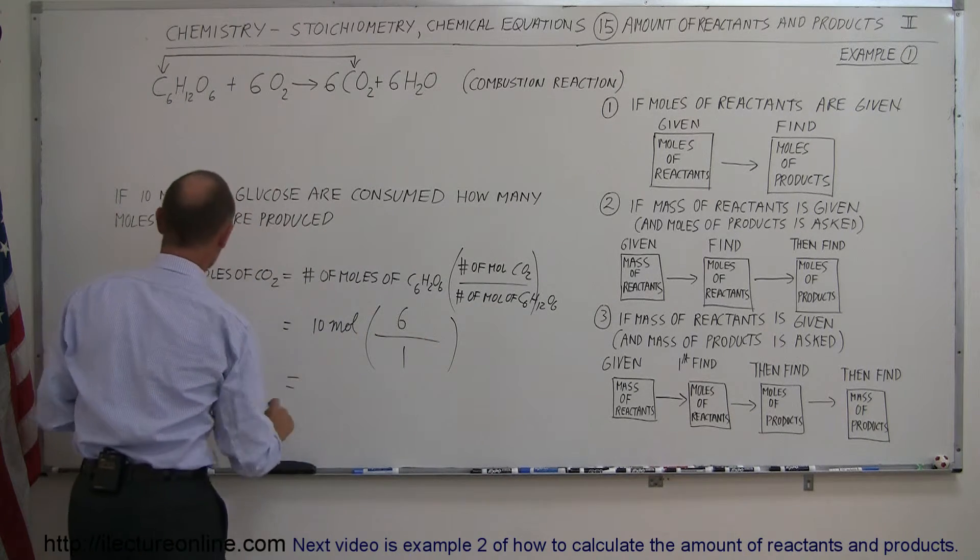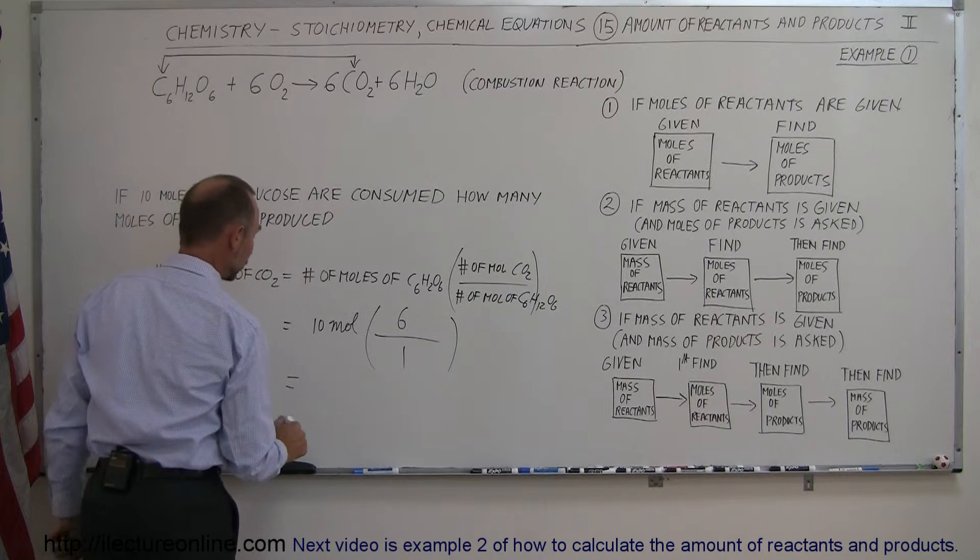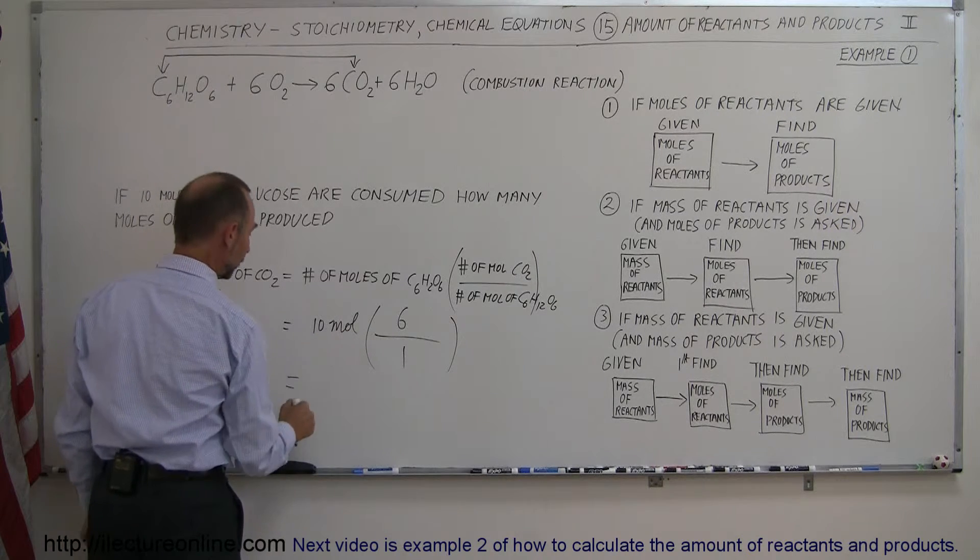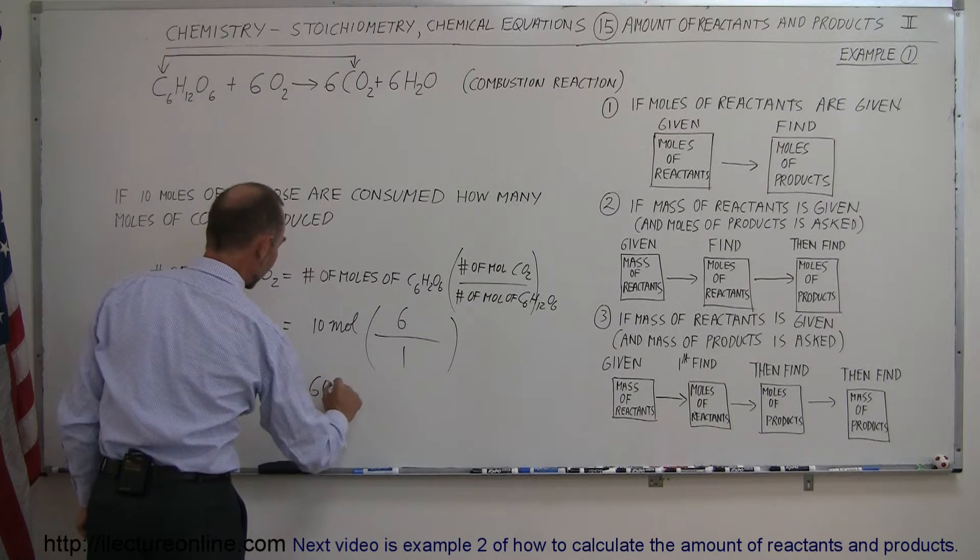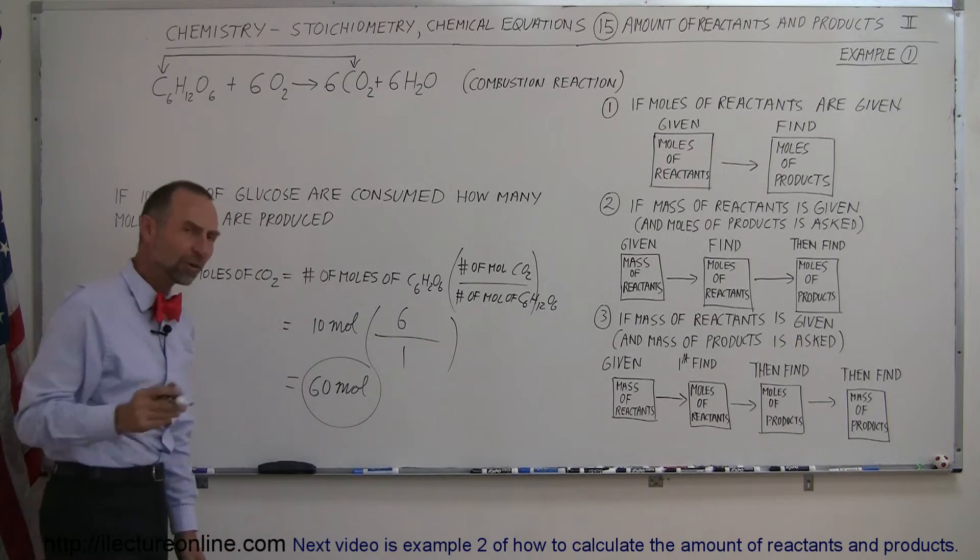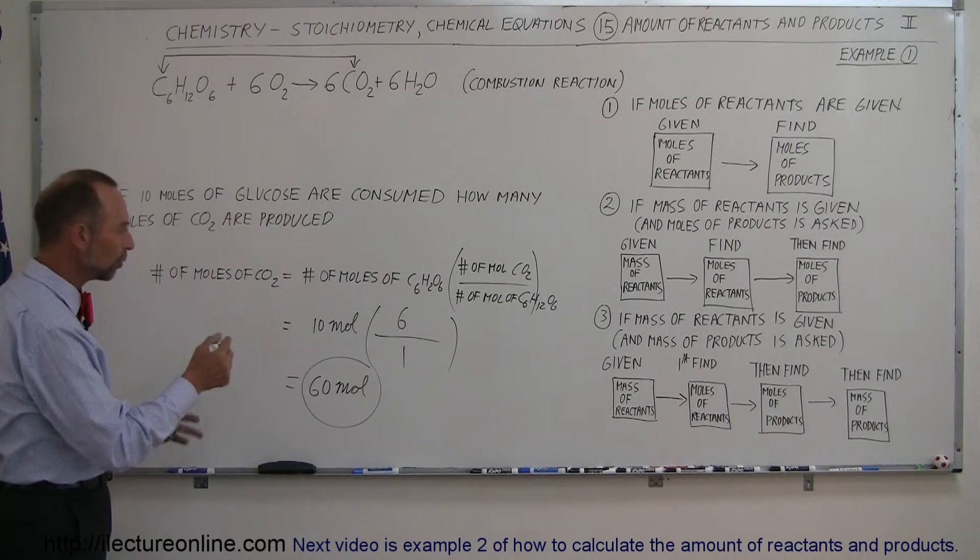So that's a 6 to 1 ratio, which means that the number of moles of carbon dioxide produced when we start with 10 moles of glucose is 60 moles. And that's the answer. So it's pretty straightforward when we go from moles to moles.